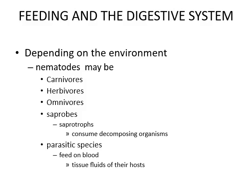Now, feeding and digestive system. Depending upon the environment, nematodes may be free-living or parasitic. The free-living nematodes may be carnivores, herbivores, omnivores, saprobes, or saprotrophs. Carnivores are flesh-eaters, herbivores feed on plants, omnivores feed on plants and animals both, and saprotrophs feed on dead organic matter or decomposing organisms. Parasitic species may be parasites of plants or animals — they feed on blood or tissue fluid of their hosts.